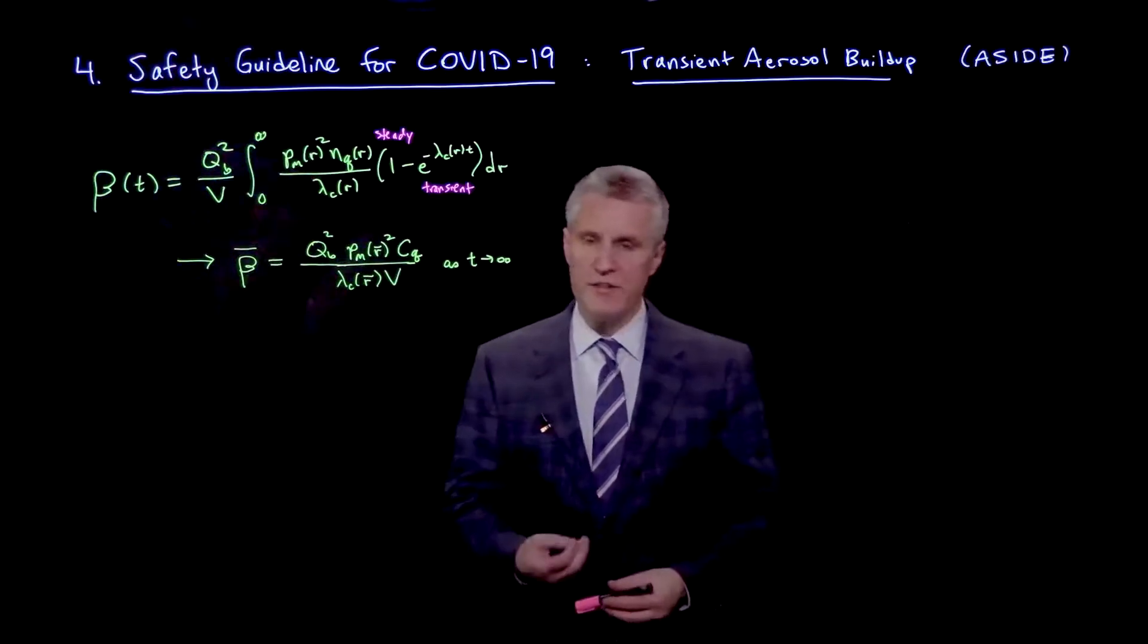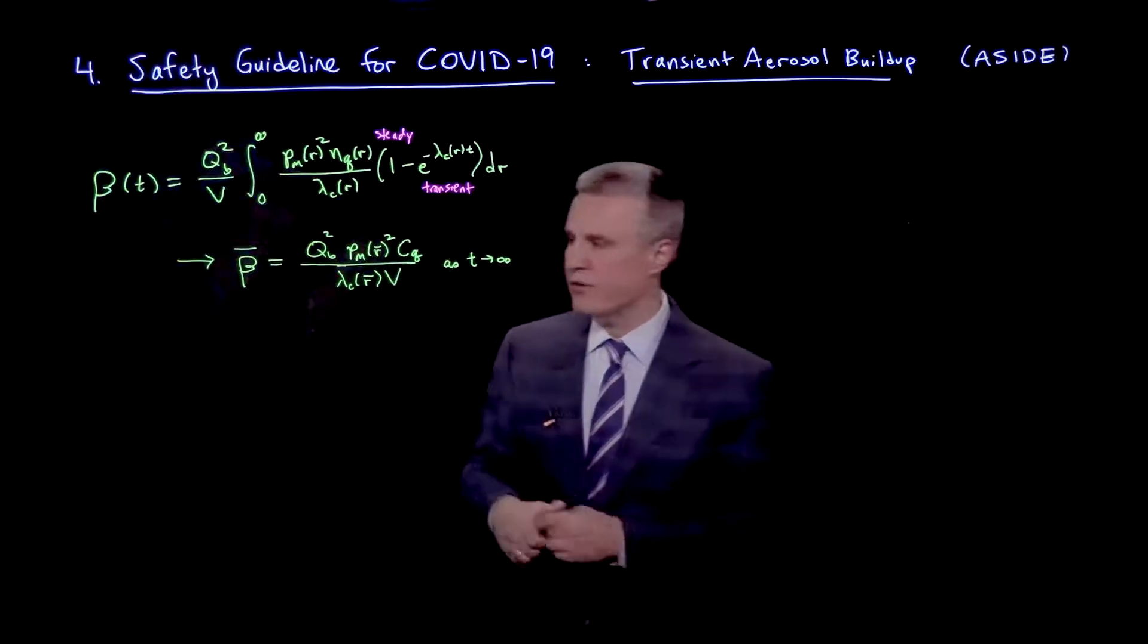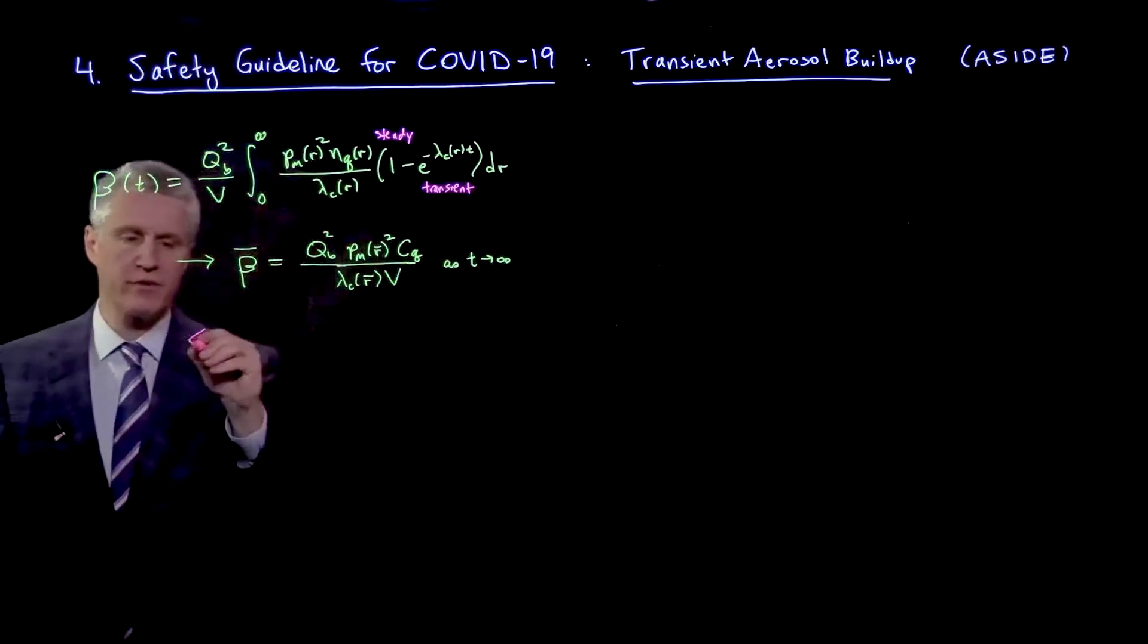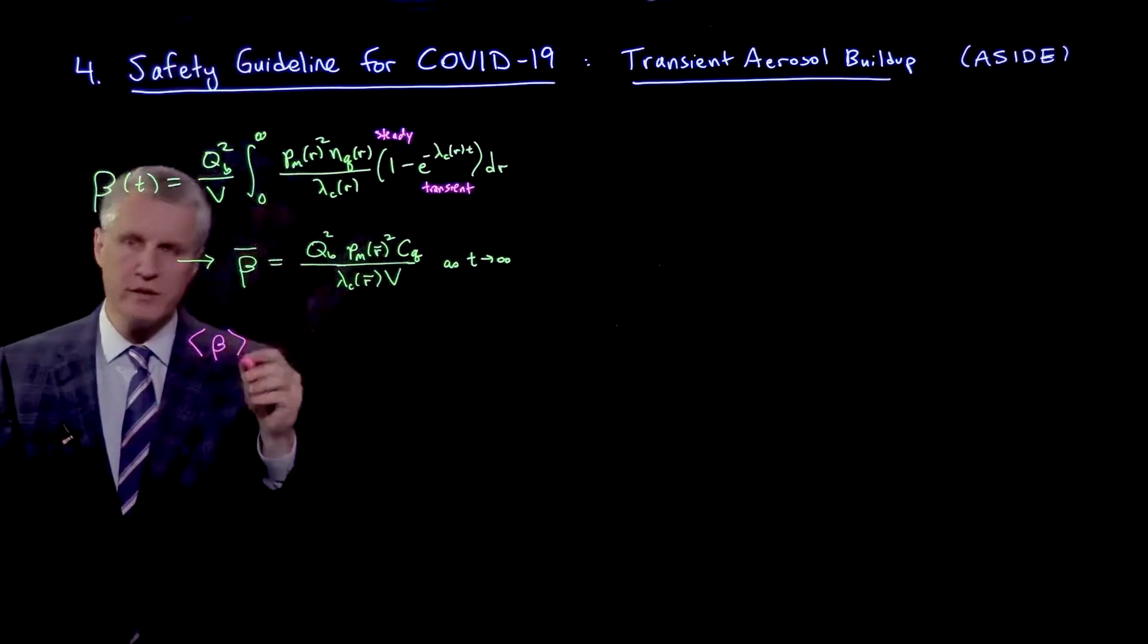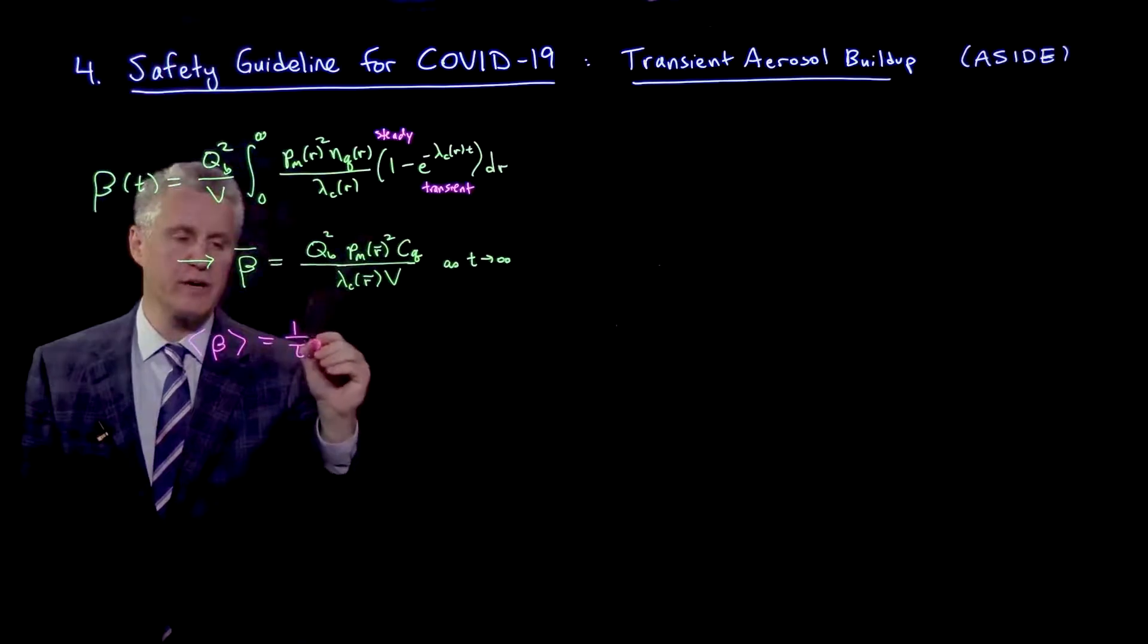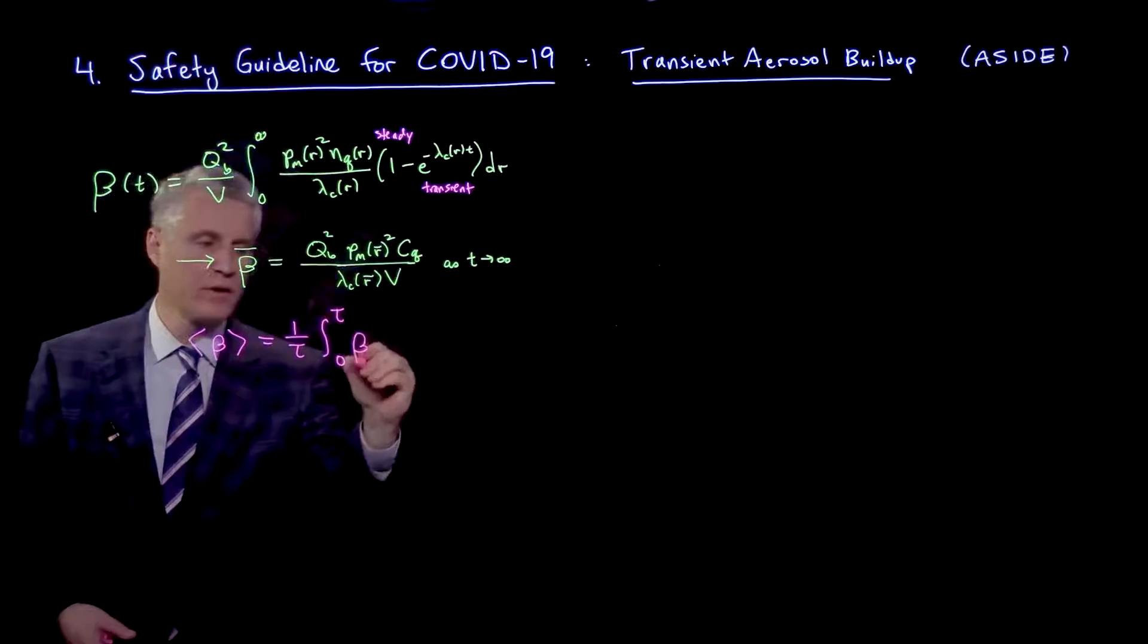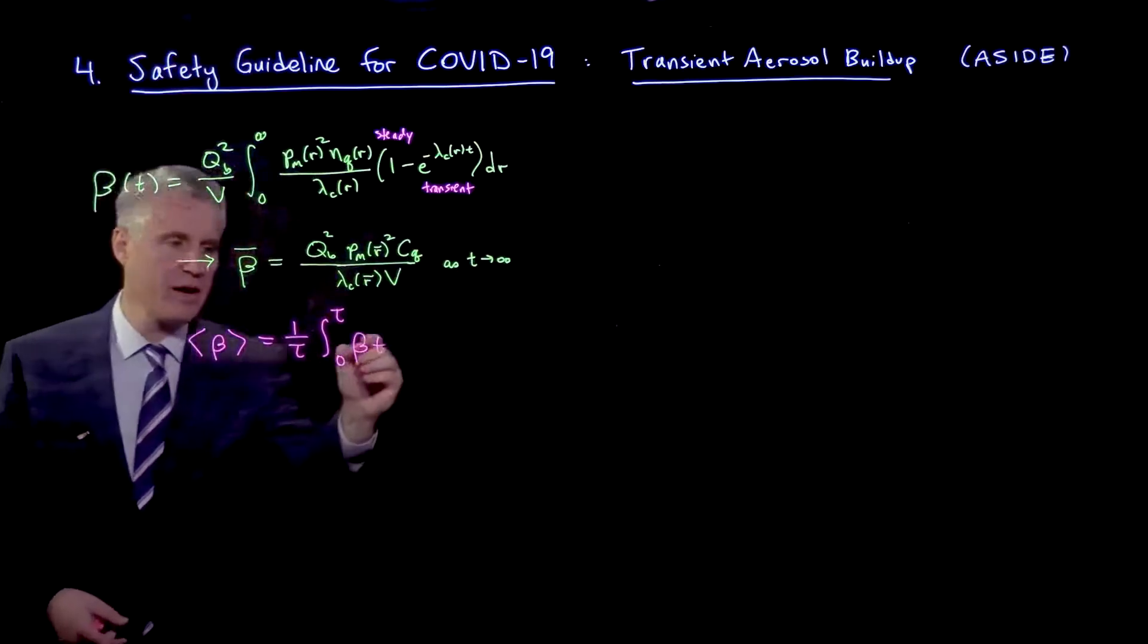And so now, looking at the transient term, let's ask ourselves, what is the average transmission rate up to a certain time tau? So that would be, we divide by a time tau, and we ask ourselves up to that time, what is the average transmission rate?